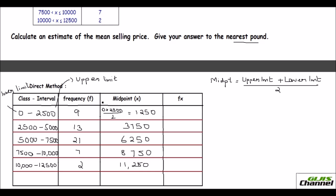Next, find the product of the frequency and the midpoint — just multiply those two columns. For the first class: 1,250 times 9 equals 11,250. For the next: 3,750 times 13 equals 48,750. Then 6,250 times 21 equals 1,31,250.